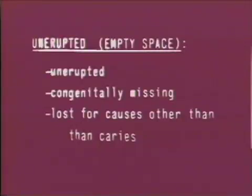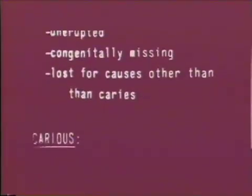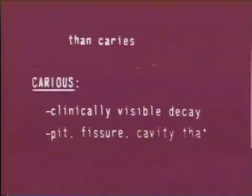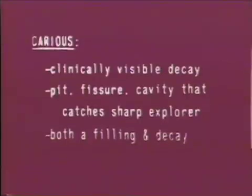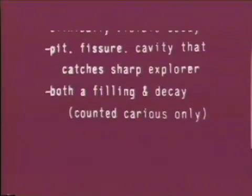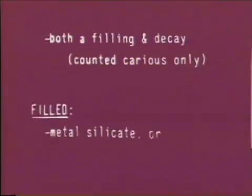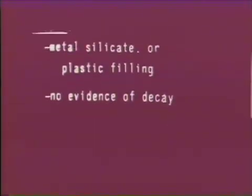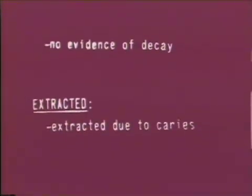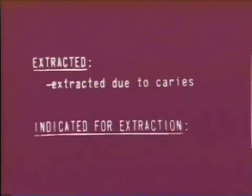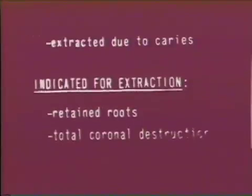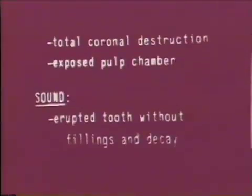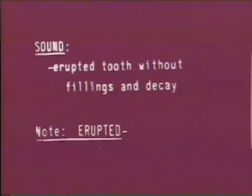These are the criteria for the classifications. An unerupted or empty space is called unerupted if there is no tooth, or if the tooth is congenitally missing, or has been lost for causes other than caries. A carious tooth is one which has clinically visible decay, or a pit, fissure, or cavity that catches a sharp explorer, or one that has both a filling and decay — in which case it's counted as caries only. A filled tooth is one with a metal, silicate, or plastic filling and no evidence of decay. A tooth is counted extracted if it is extracted due to caries only. A tooth is marked indicated for extraction if it has retained roots, total coronal destruction, or an exposed pulp chamber. A tooth is marked sound if it is an erupted tooth without fillings and without decay.